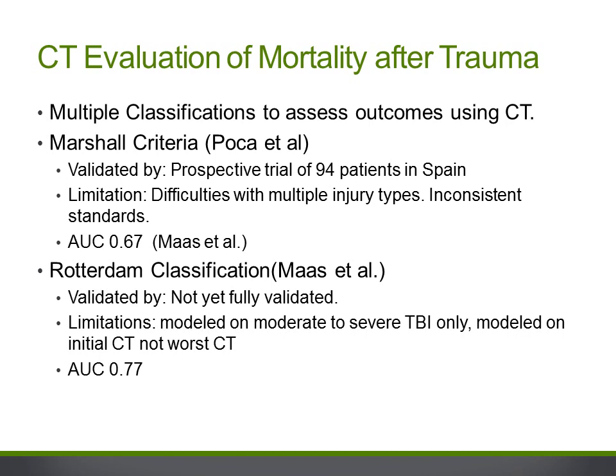There are two major imaging-based classification systems which attempt to standardize assessments of CT abnormality after head trauma in hopes of predicting outcome. The first was the Marshall criteria, developed in 1992, which were validated in a prospective trial. This study was limited by the inability to classify TBI patients with multiple injury types and also had inconsistent standards for CT features such as timing of the scan after injury. The Rotterdam classification system, created in 2005, is an update which seeks to address these previous limitations. However, it has not yet been fully validated and is modeled only on moderate to severe TBI patients based on initial CT imaging.